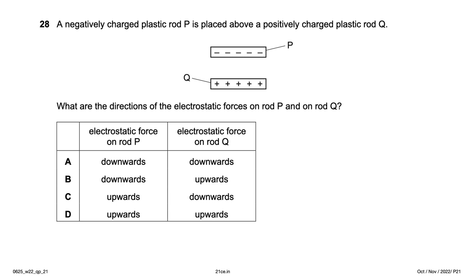A negatively charged plastic rod P is placed above a positively charged plastic rod Q. What are the directions of the electrostatic forces on rod P and rod Q? Opposite charges attract, so the force on rod P is downward and the force on rod Q is upward — option B.